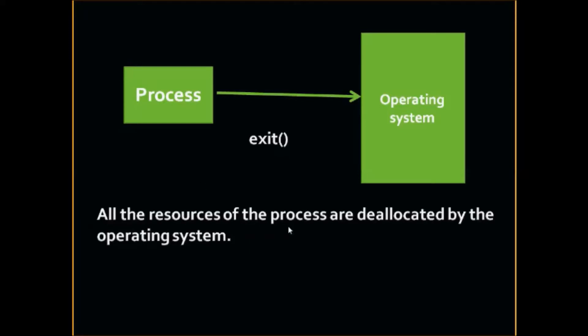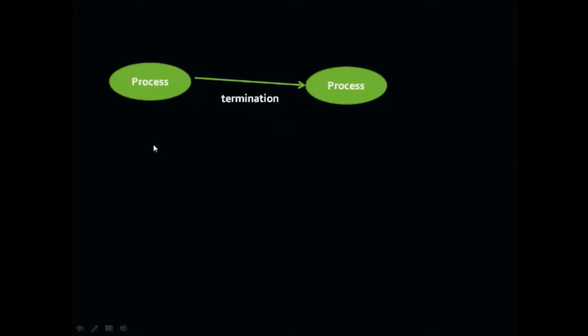A process can cause the termination of another process also by using appropriate system call. Usually, such system call can be invoked by a parent process to kill its child process.